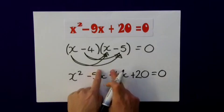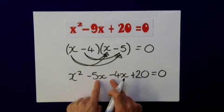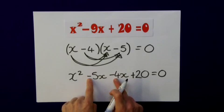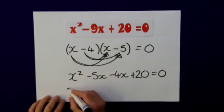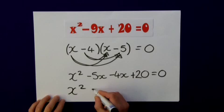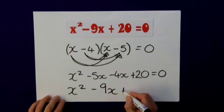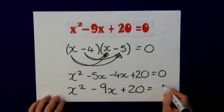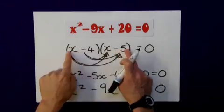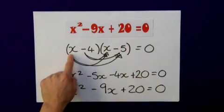Now I can group together these terms. These are like terms. Minus 5x minus 4x will give me a total of minus 9x. So indeed I end up back with what I started. Minus 9x plus 20 is equal to zero. So this is correct. This is my factorized quadratic equation.